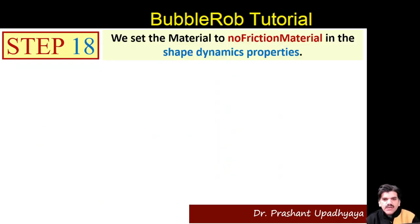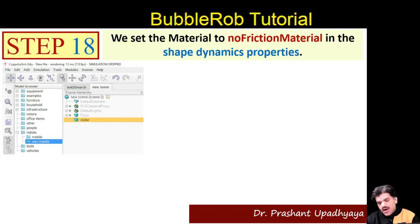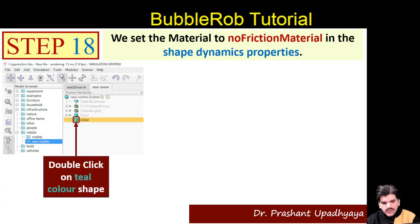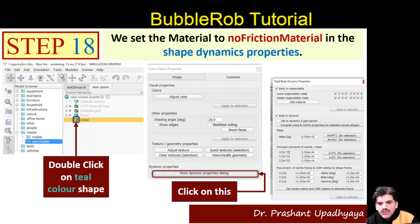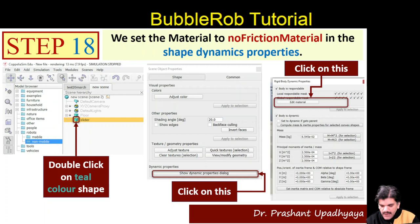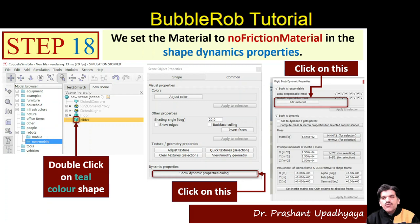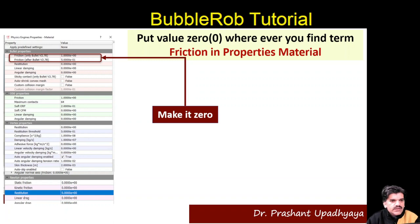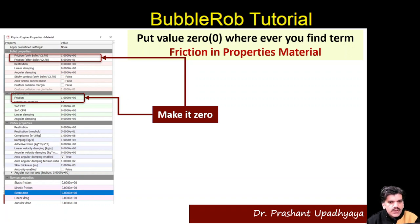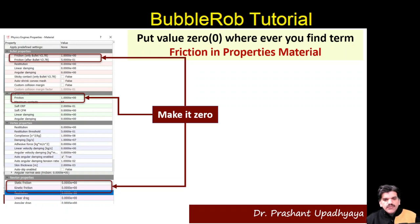The next step is to set the slider material as a no-friction material. Double-click the teal-color shape, go to the Dynamic Properties dialog box, and find the 'Add Material' option. Wherever the word 'friction' appears, set it to zero. In Bullet Properties, set friction to zero; in ODE Property, set friction to zero; in Newton Properties, set friction to zero.